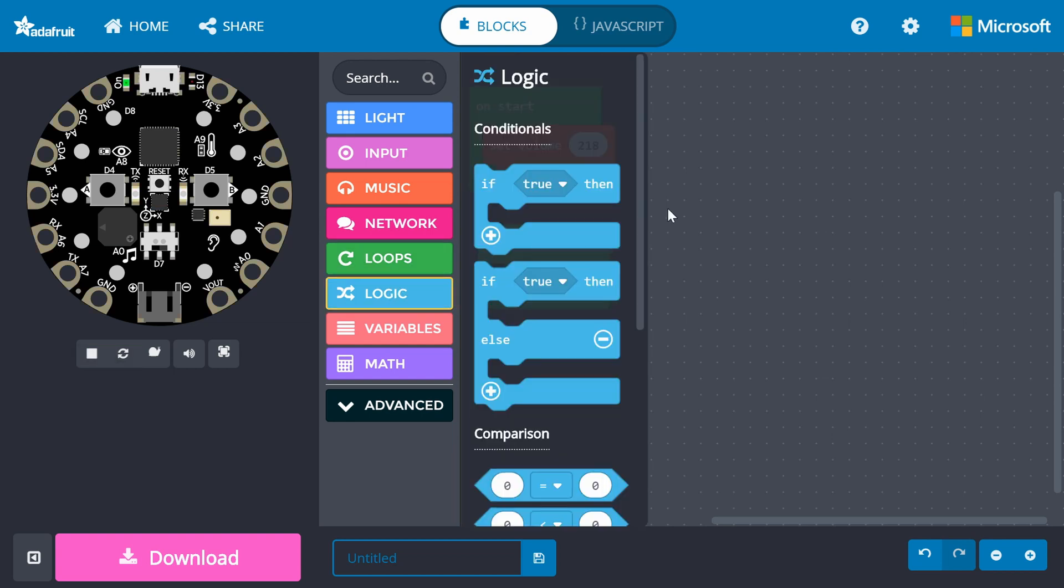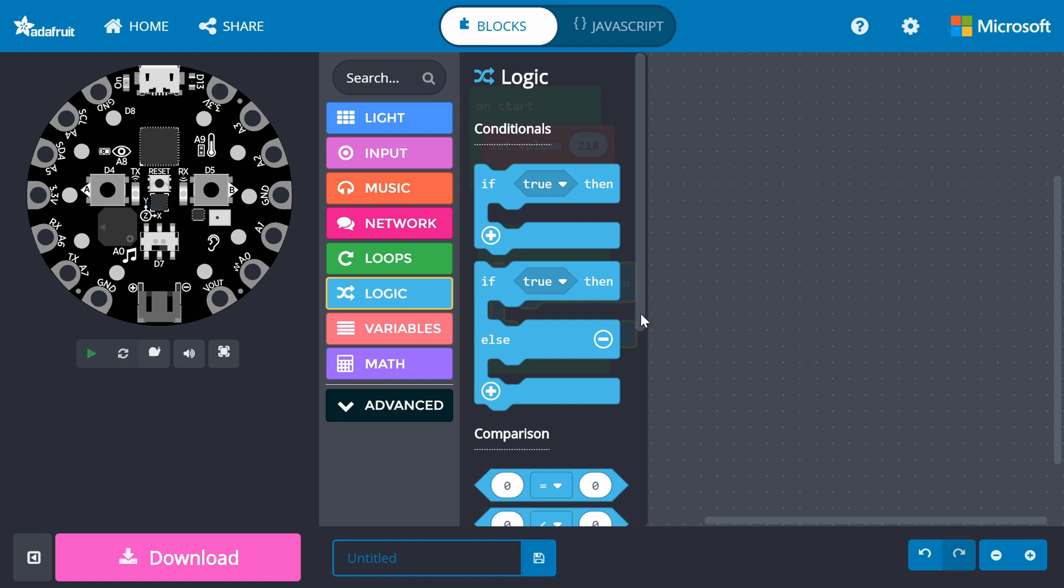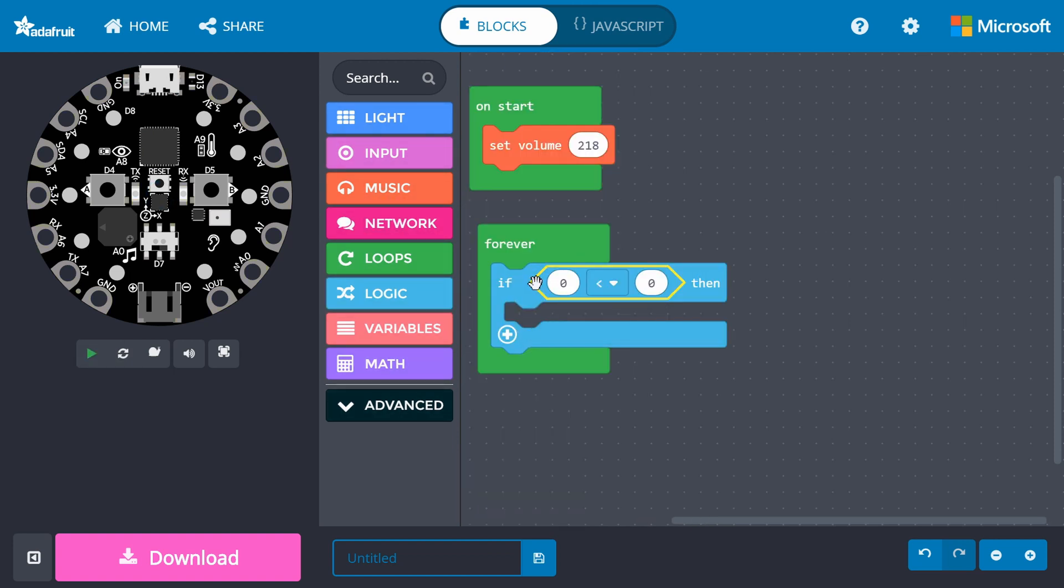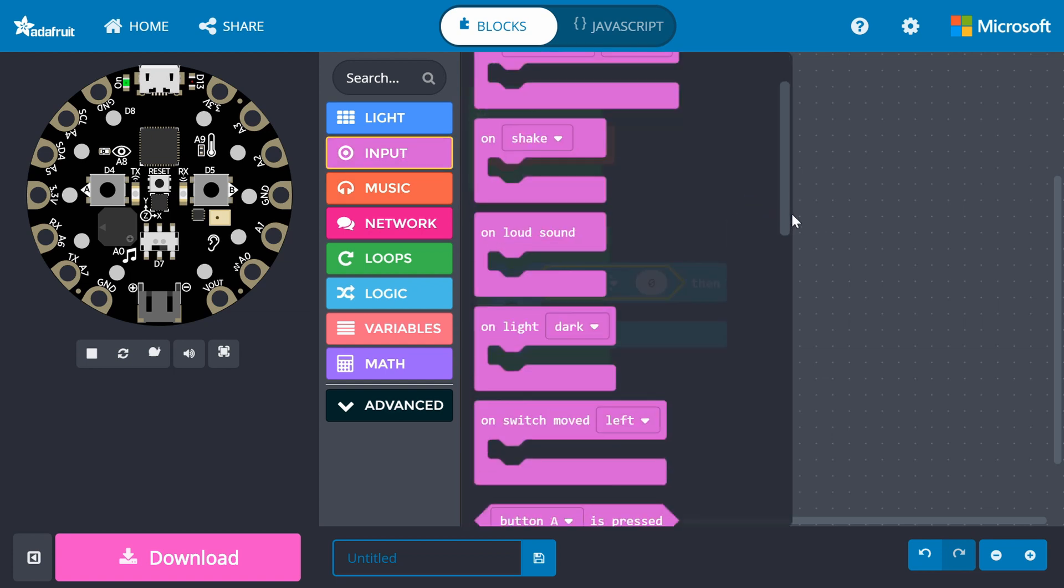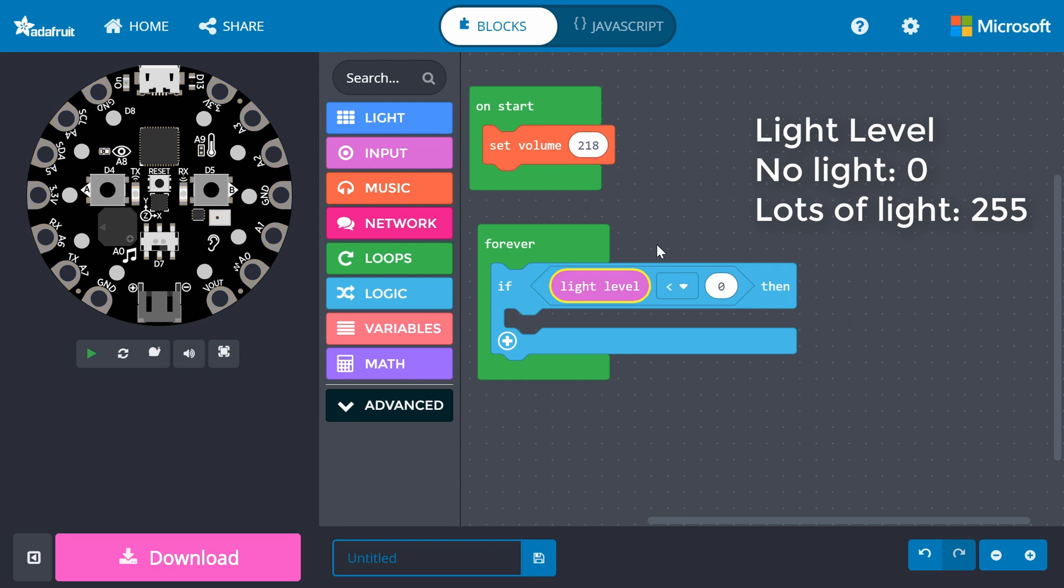From logic, drag an if block to forever. Back in logic, drag a less than block to the if blocks conditional statement. Go to input and drag a light level block to the left side of the less than block. The light sensor will give us a reading between zero, which means no light, and 255, which means lots of light.